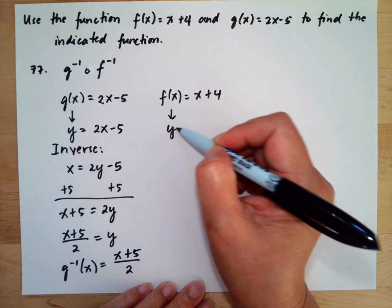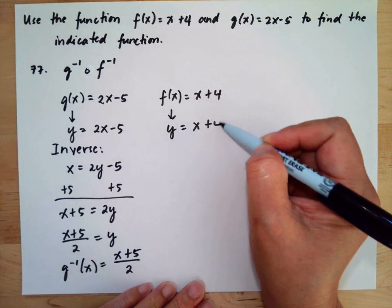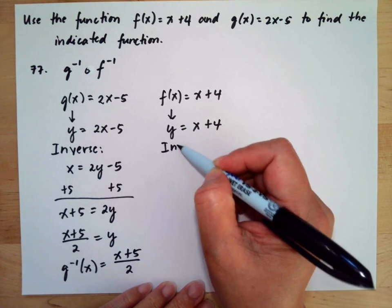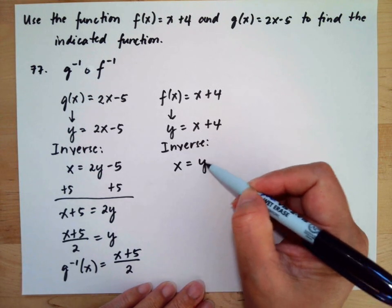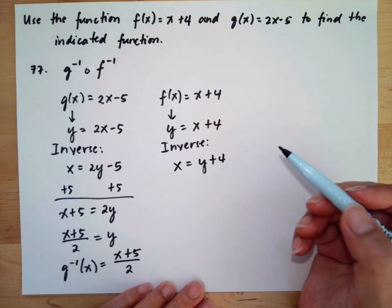This is y = x + 4. To find the inverse, we need to change the y into x and the x into y, then solve for y.